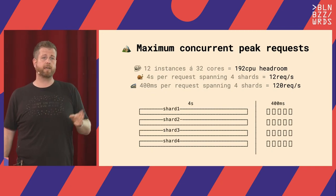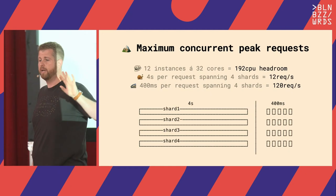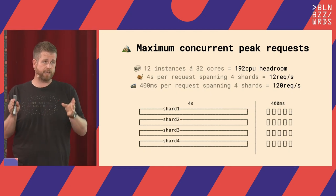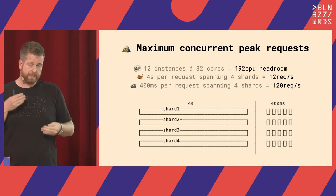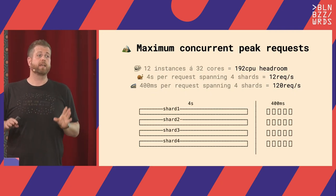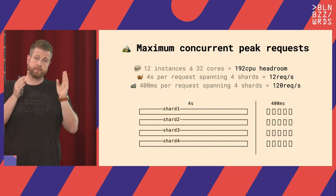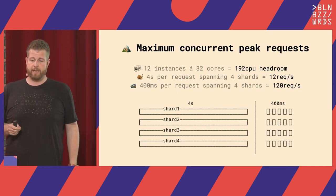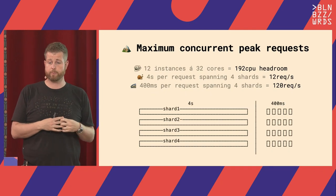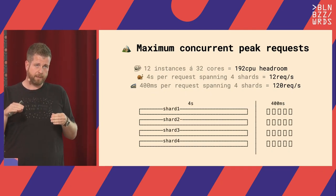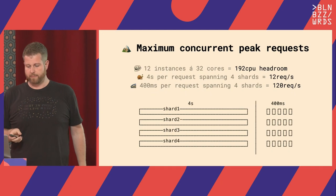The idea was to set a sort of capped time budget for requests — we wanted requests to have 400 milliseconds at max. Because that means on four shards, we were able to fulfill 120 requests per second, so any spikes in requests we could easily handle. In the end, this saves a lot of money and everybody's happy. That was the basic idea for the project.